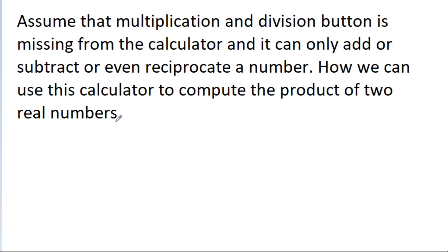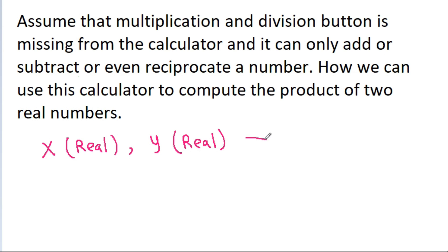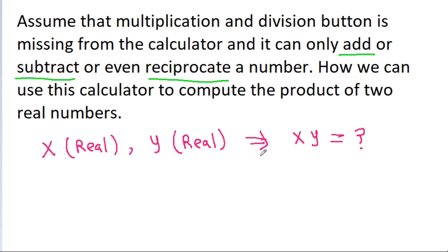We have two real numbers — suppose x, which is a real number, and y, which is also a real number. We have to find the value of x·y, and we cannot multiply or divide. We can only add, subtract, or reciprocate a number. So without multiplication and division, how can we get x·y?